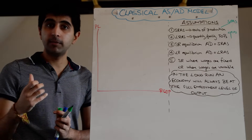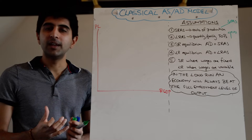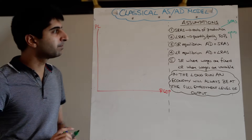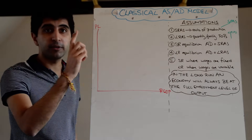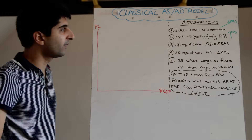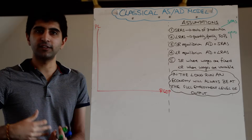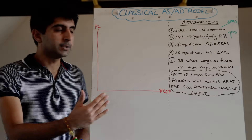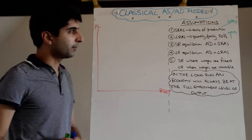The classical model also features a long run aggregate supply curve, whose position is determined by the quantity and quality of factors of production. It is vertical because it represents the full employment level in the economy — the maximum output that can be produced by using all factors of production to their maximum potential sustainably. If the quantity and quality of factors of production increase, the curve can shift outwards.